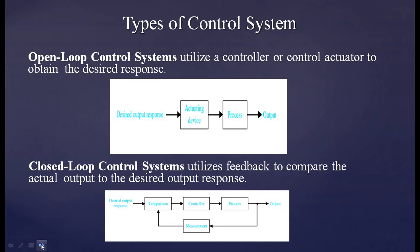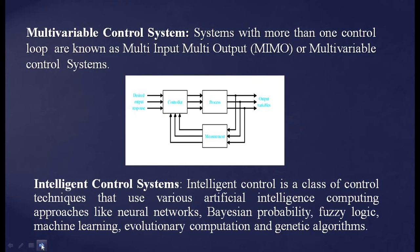In a closed loop control system, it gives us feedback to compare the actual output to the desired output response. Here we have a feedback loop with three components: a comparator, then a controller, then a process, and whatever output comes from the process is fed back through measurement to the comparator. There it is compared with the desired output response, and whatever deviation exists can be controlled through this closed loop control system.